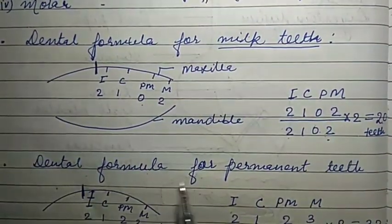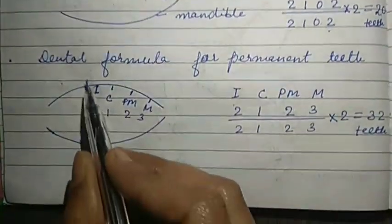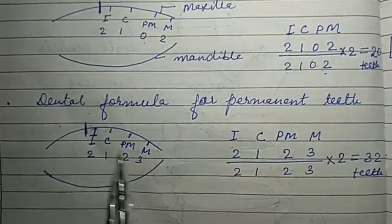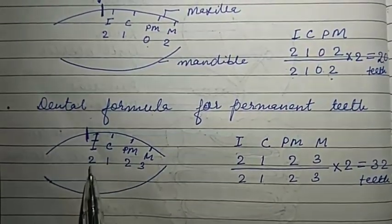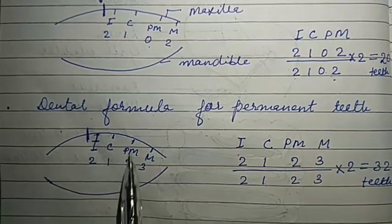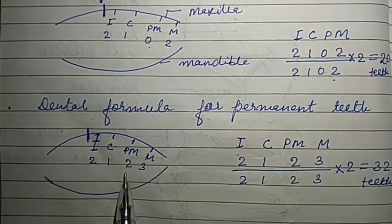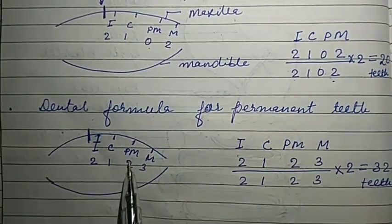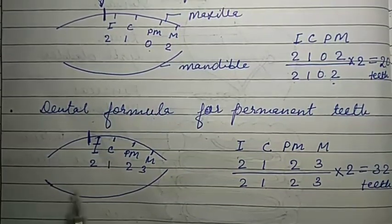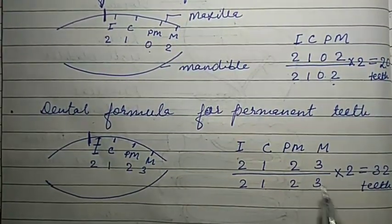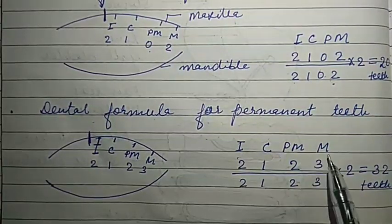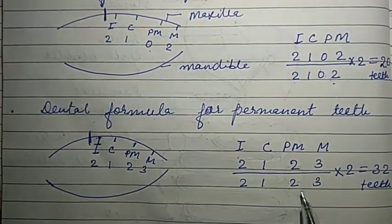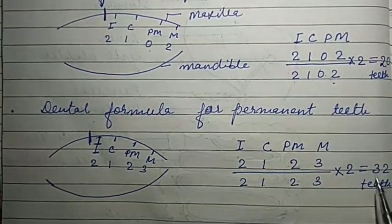The dental formula for permanent teeth follows the same structure. In permanent teeth: incisors are 2, canines are 1, premolars are 2 (absent in milk teeth but present in permanent teeth), and molars are 3. So the dental formula for permanent teeth is 2, 1, 2, 3 / 2, 1, 2, 3 multiplied by 2, giving a total of 32 teeth.